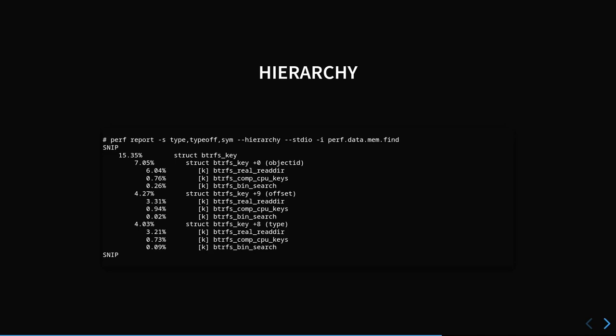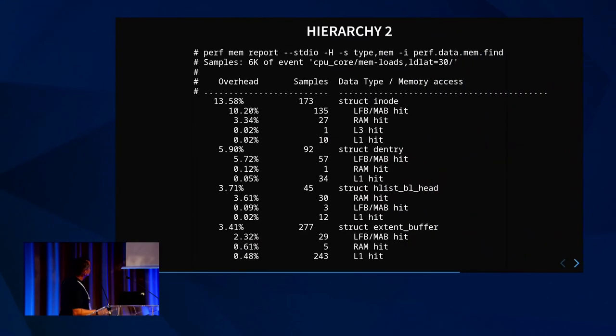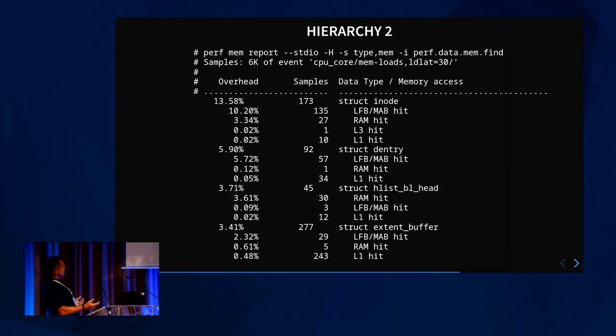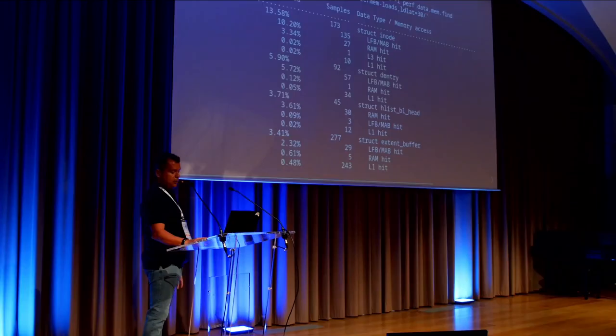Of those 15%, 7% is for the key at offset zero, and then you see the object ID and inside of the object ID you see other details. Or you can do type plus memory level — struct inode mostly coming from the line fill buffer, then from L2, then not resolved, and struct dentry. So you can combine those things just like you did with other sort fields.